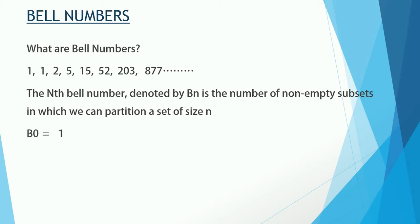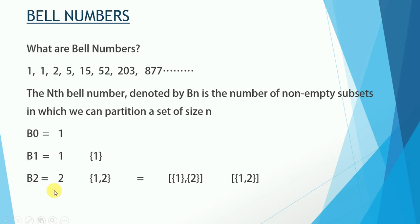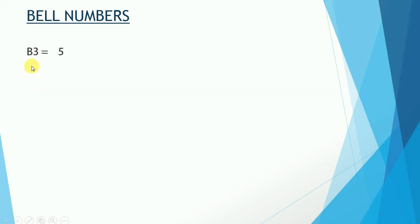In this series, B_0 is 1 — it always starts with 1. B_1 is 1, meaning a single-element set can only be partitioned in one way. Then B_2 is 2, meaning we can partition the set {1, 2} in two ways: keep them in individual partitions, or keep them together.